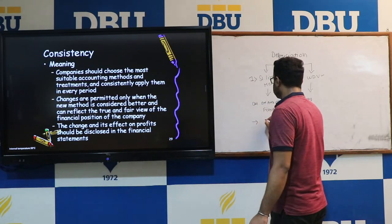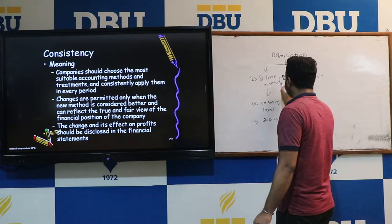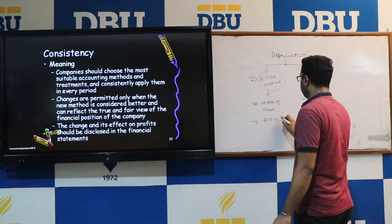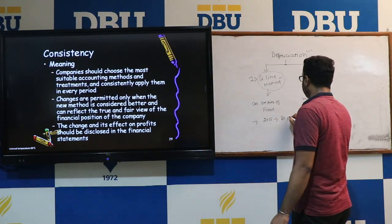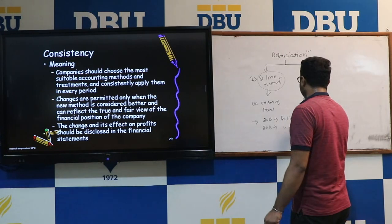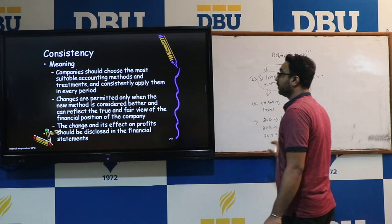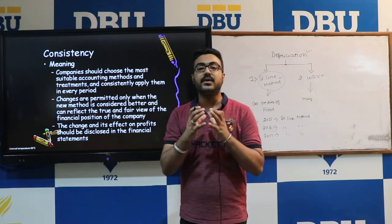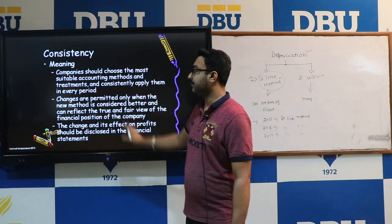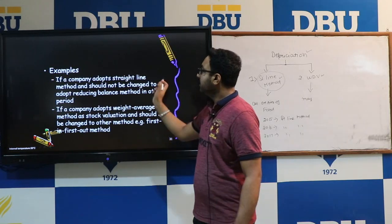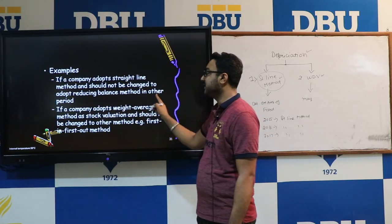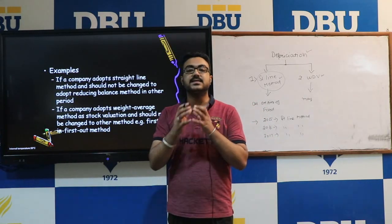For example, if any organization followed the Straight Line Method in 2015 to calculate the amount of depreciation, in 2016 and 2017 they should also follow this same concept. This creates consistency when we want to compare yearly amounts with each other. If a company adopts the Straight Line Method, it should not be changed to the Reducing Balance Method in another period.